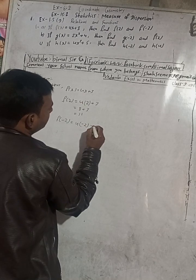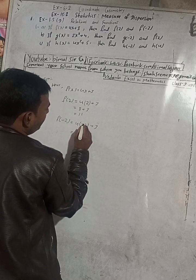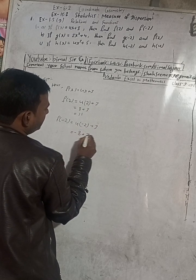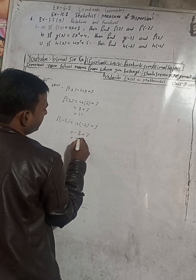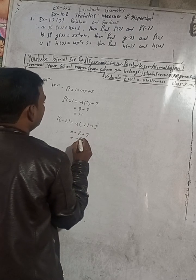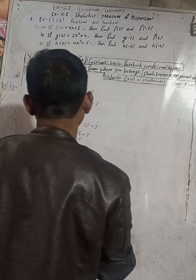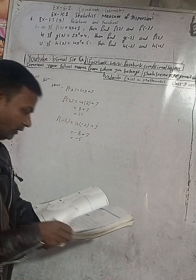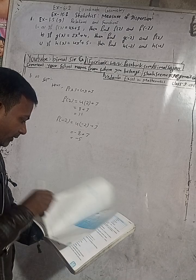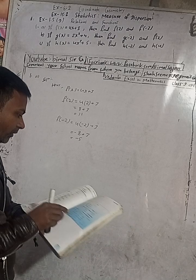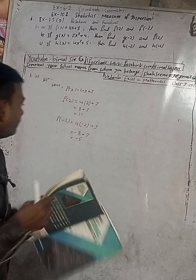The answer is 11. Now for f(-2): in place of x put minus 2, so this is 4 multiplied by minus 2, plus 3, which gives minus 8 plus 3, which equals minus 5. Let me check the answer in the book — 11 and minus 5. Correct!